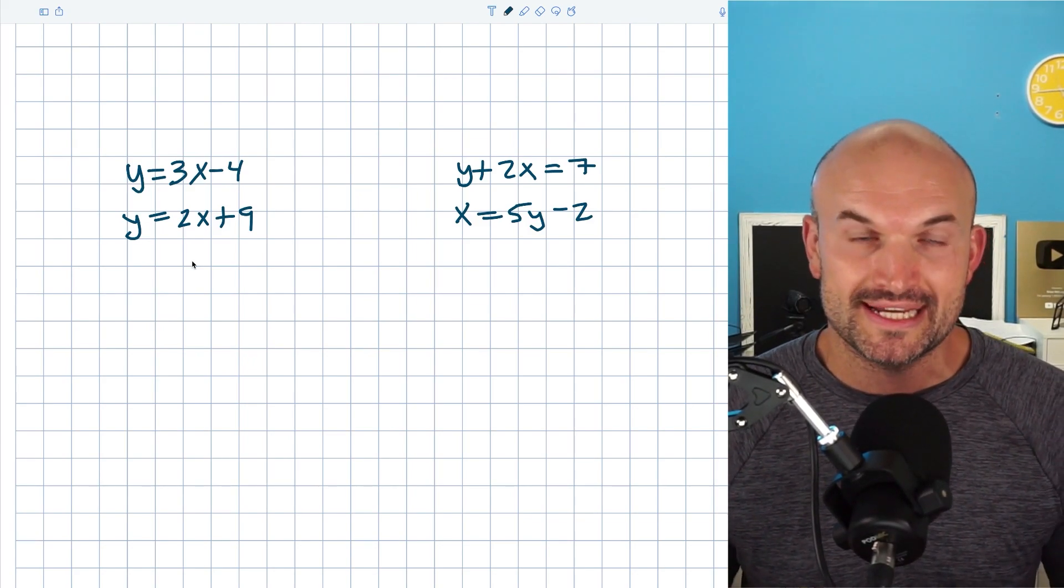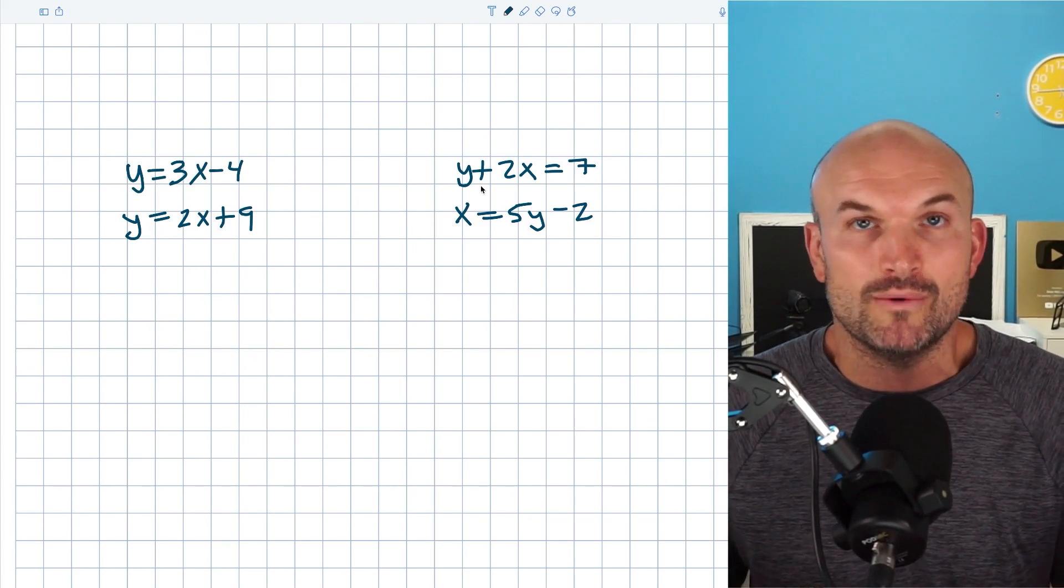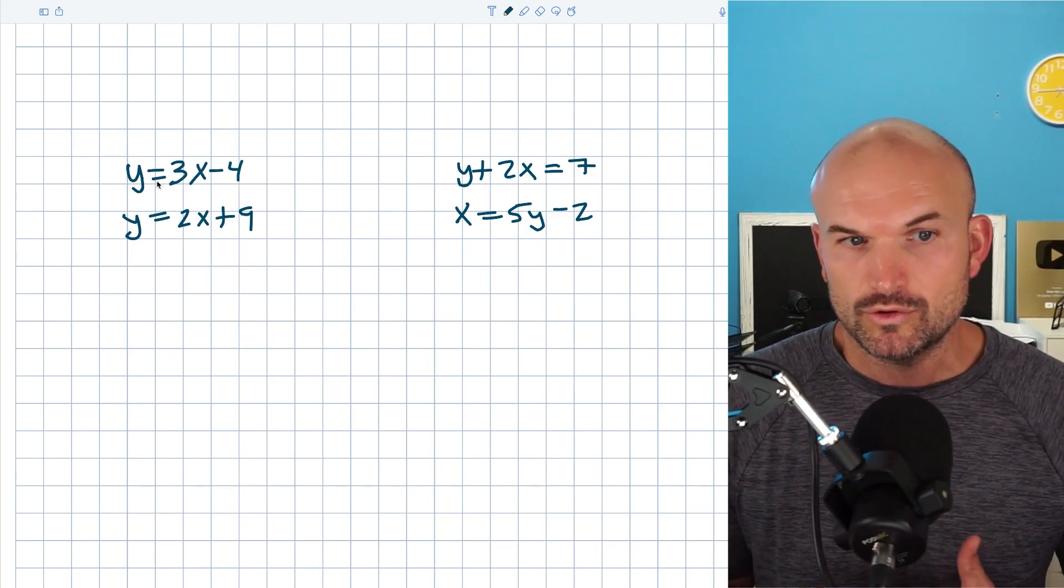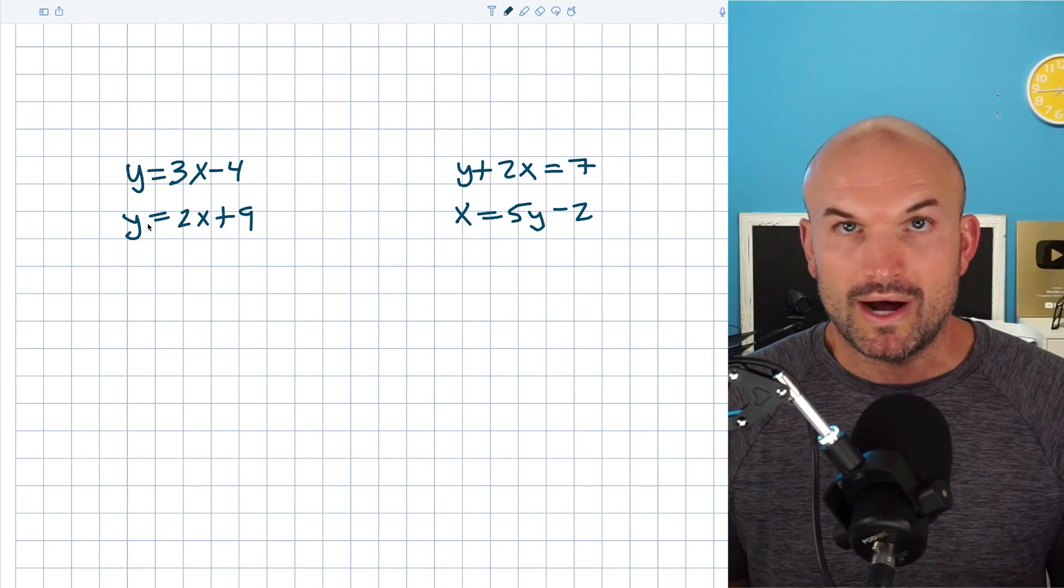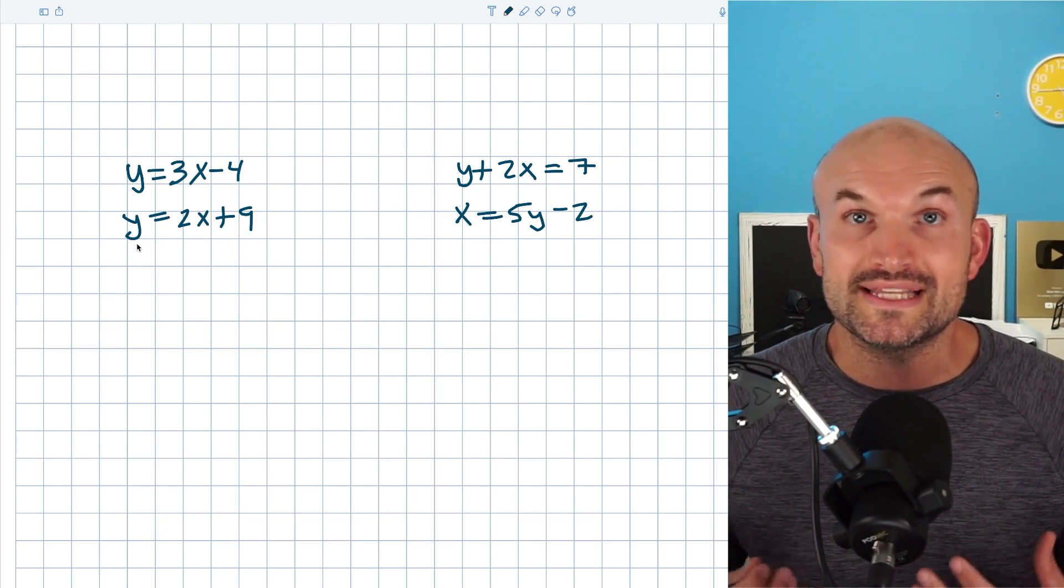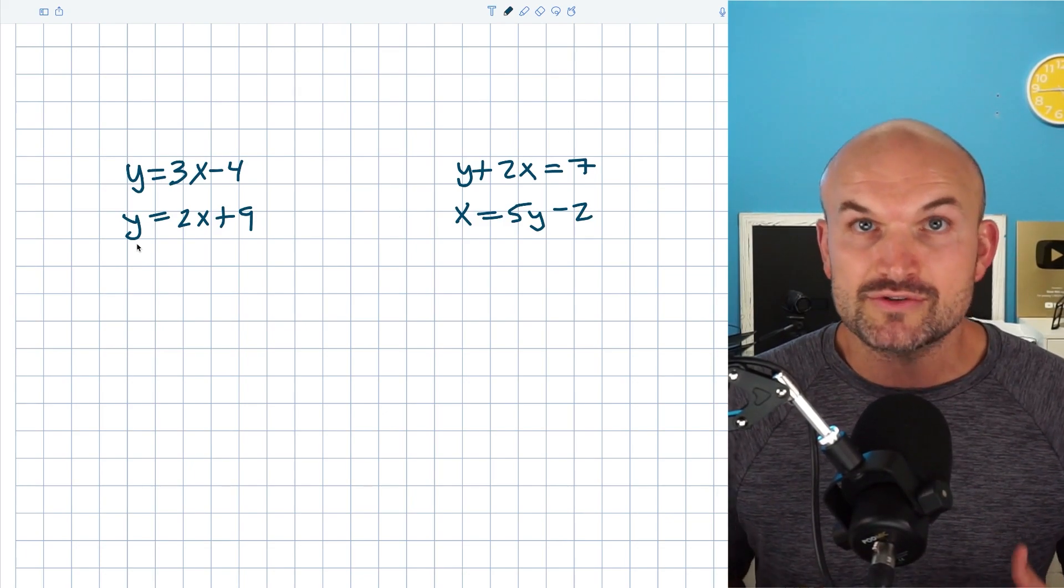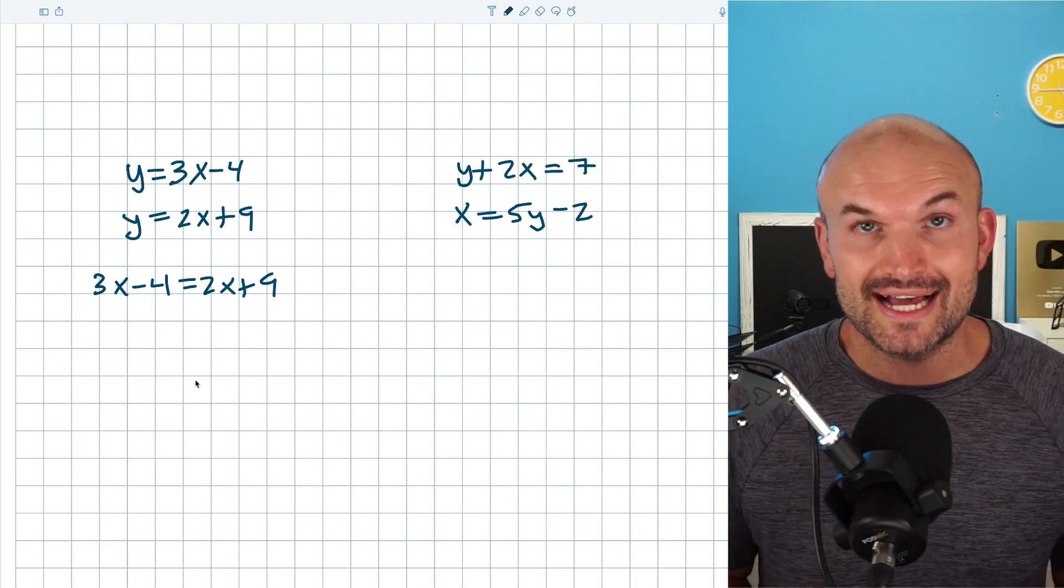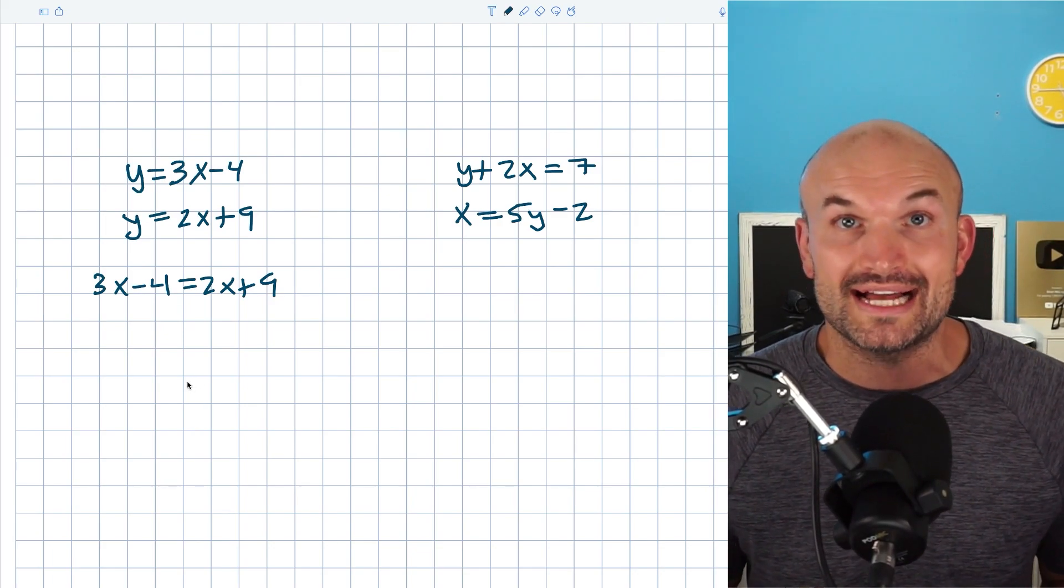So doing a problem like this with substitution is extremely easy because basically all we simply need to do is set the equations equal to each other, right? If 3x minus 4 is equal to y and 2x plus 9 is equal to y, well, then they're going to be equal to each other. They're both equal to y, meaning they're both equal to each other. So therefore, I can just write them as a simple equation as 3x minus 4 equals 2x plus 9, and then go ahead and solve for x.